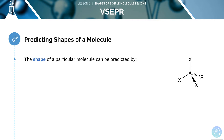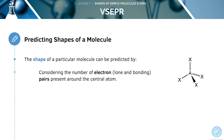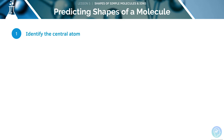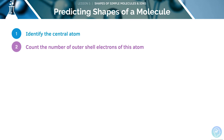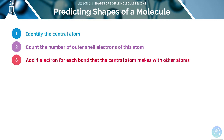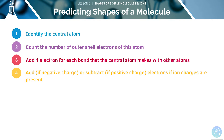We can predict the shape of a molecule by considering how many lone pairs of electrons and how many bonding pairs of electrons are present. Here are some steps to predict the shape of a molecule. Firstly, we must identify the central atom. Then, we will count the number of outer shell electrons — first write down the total number of electrons in the outermost shell of the central atom, which will be the same as the group number the element is found in. Next, you must add one electron for each bond that the central atom makes with other atoms.